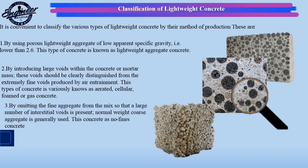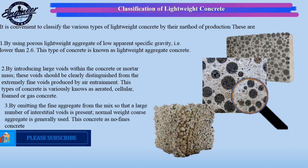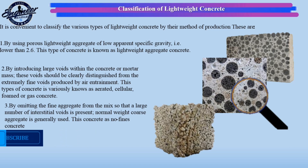The third method is by omitting the fine aggregate from the mix so that a large number of interstitial voids is present. Normal weight coarse aggregate is generally used. This concrete is known as no fines concrete.